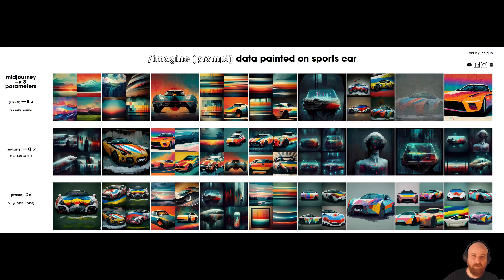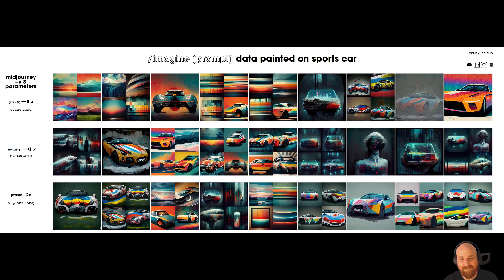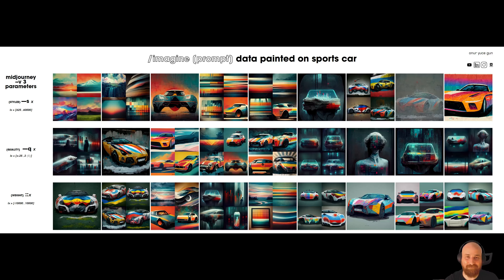Today we will look into MidJourney parameters that were released with version 3. I'm going to specifically look into three parameters: stylize, quality, and weight. I have a mix of images here, and in the coming minutes I will go in detail and explain how you can navigate your way towards the image you want to create.